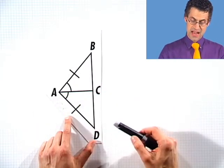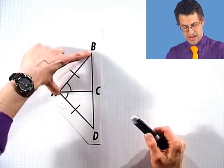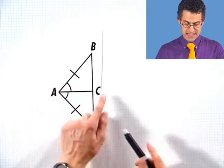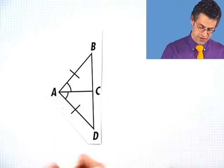Well, the answer is yes. This side is congruent to that side, this angle is congruent to that angle. And what about this side? Since AC equals itself, it's congruent to itself.